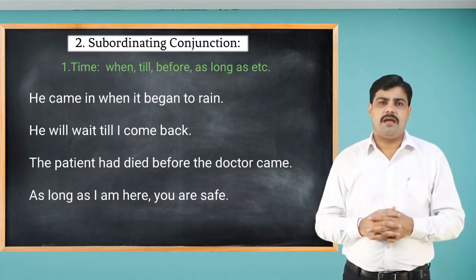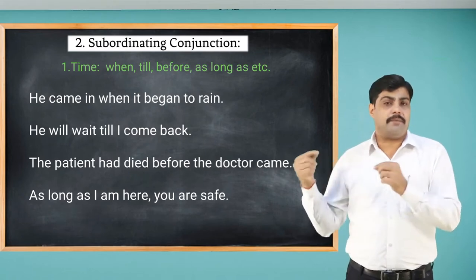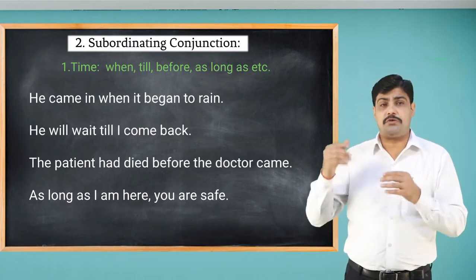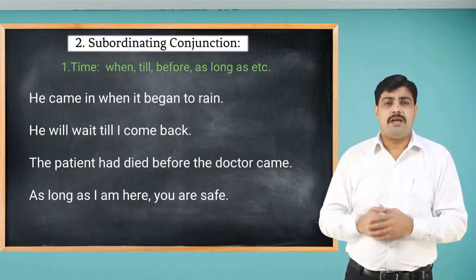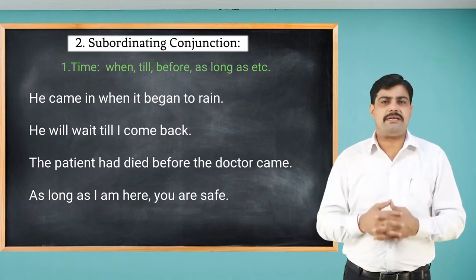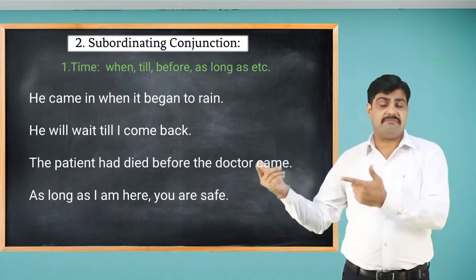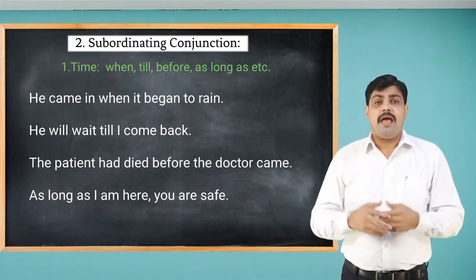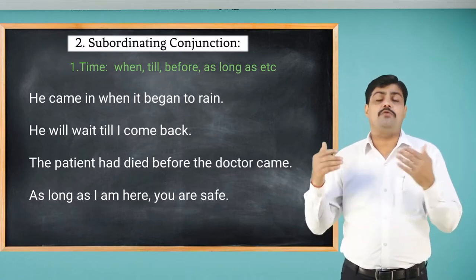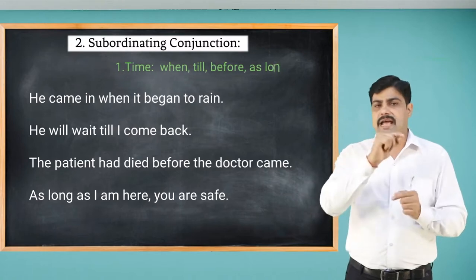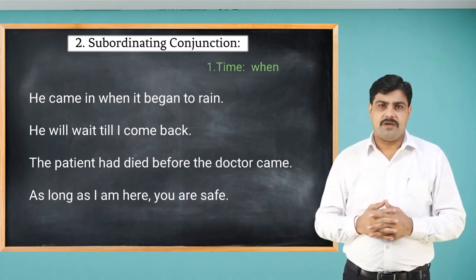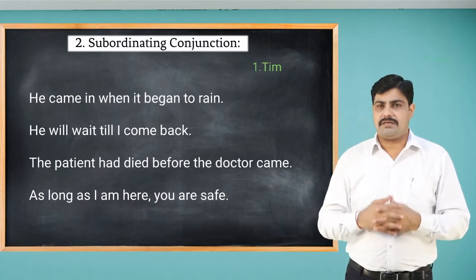'He will wait till I come back' — here 'till' is a conjunction used for time. 'The patient had died before the doctor came' — here 'before' is used as a conjunction for time. 'As long as I am here, you are safe' — 'as long as' indicates time. These are the conjunctions used for time.